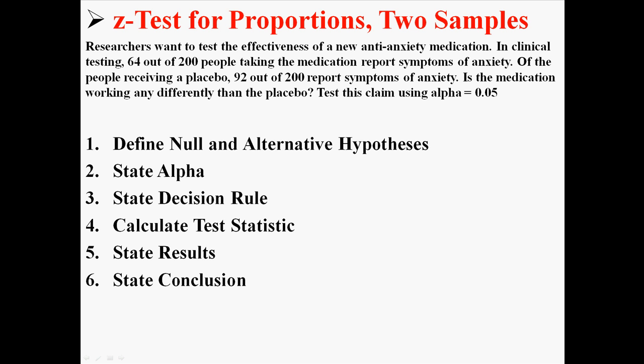First, we're going to state the hypotheses. We're going to state alpha, state the decision rule. Then we're actually going to calculate the Z, state our results, and then state our conclusion.